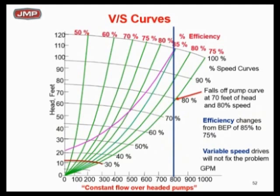Let's go back to the same pump curve: 800 GPM, 110 feet of head. Let's assume it's a condenser water pump where I want constant flow of 800 GPM, or a hot water or chilled water system with two-way valves at full load — which only happens about 1% of the time, but it will happen. In other words, let's look at full flow: I need 800 GPM.